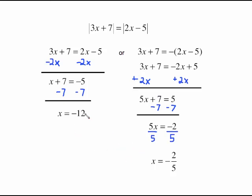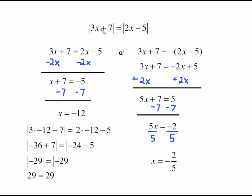Checking x equals negative 12: plug negative 12 into both sides. 3 times negative 12 plus 7 gives negative 36 plus 7. Different signs — keep the sign of the larger and subtract — giving negative 29; its absolute value is 29. On the other side, 2 times negative 12 minus 5 gives negative 24 minus 5, which is negative 29; its absolute value is also 29. Both sides equal 29, so x equals negative 12 checks out.